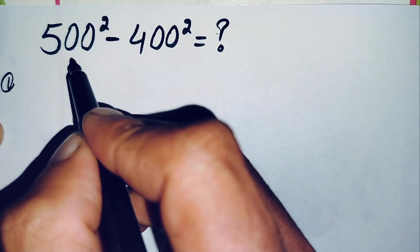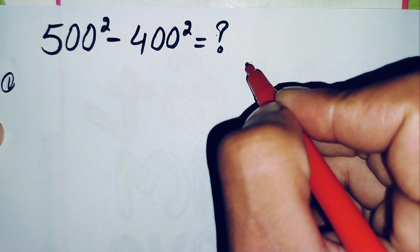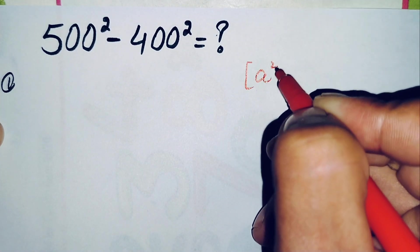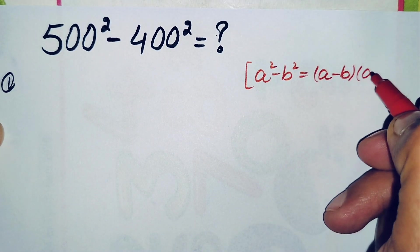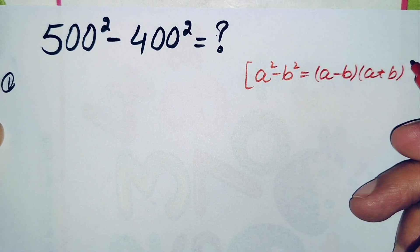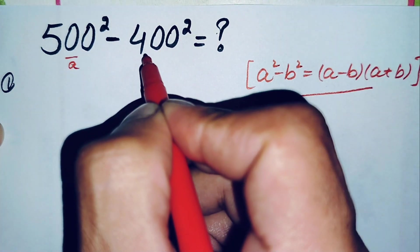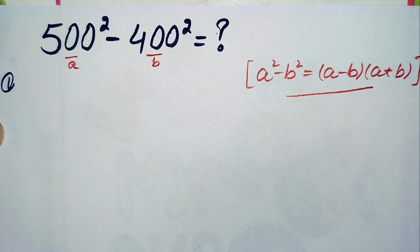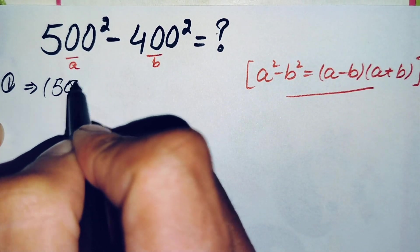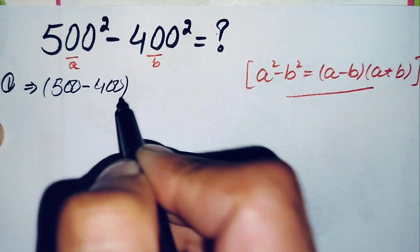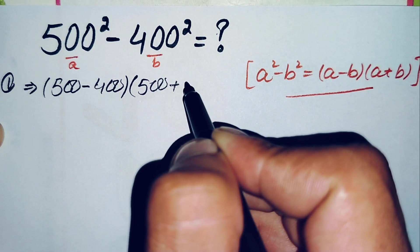In the first method we will use the algebraic identity a² minus b². We know that a² minus b² can be written as (a minus b) times (a plus b). Here a is 500 and b is 400, so this becomes (500 minus 400) times (500 plus 400).